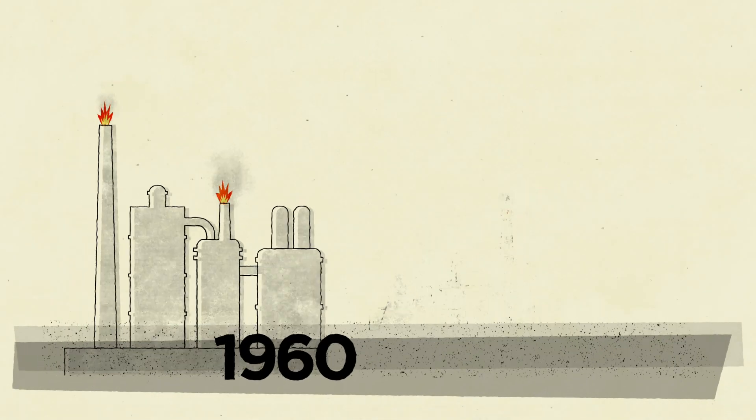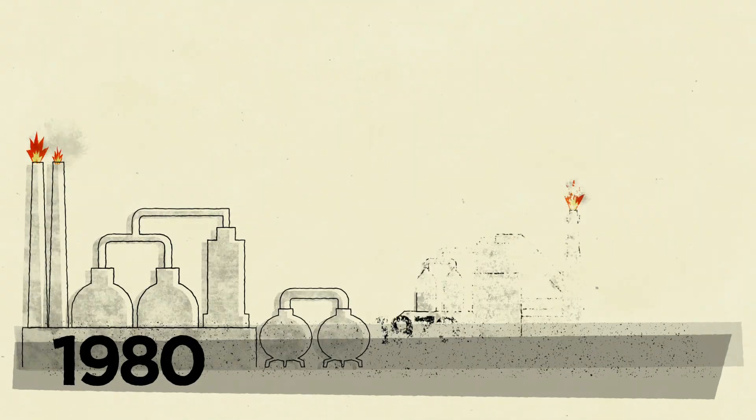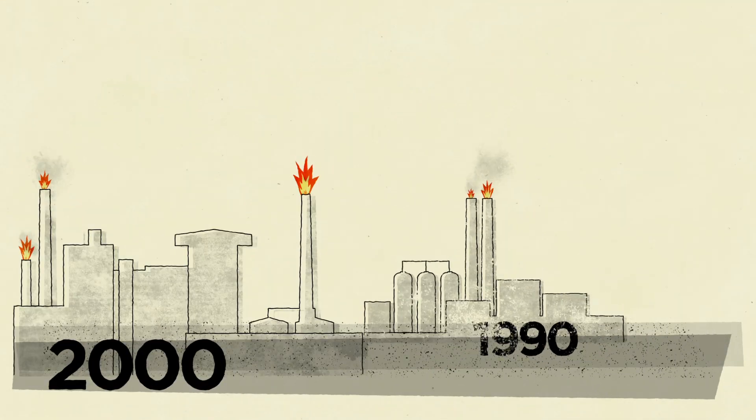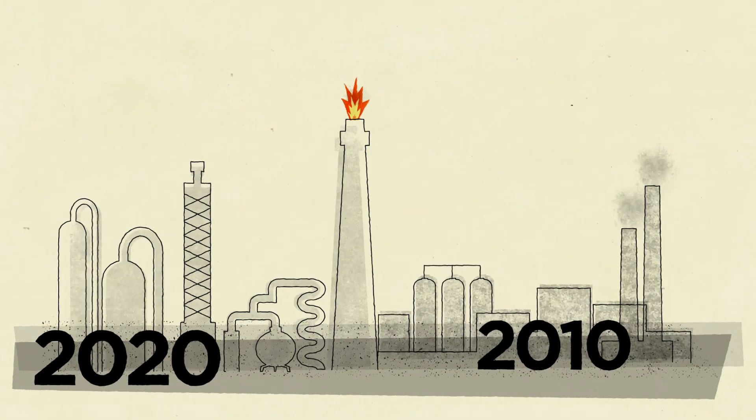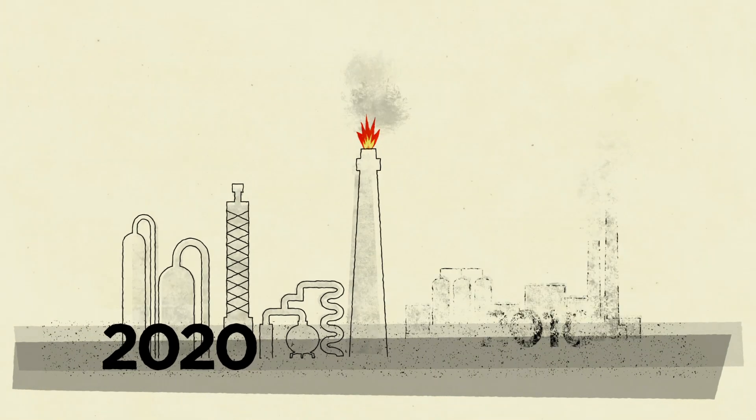1. Chemical recycling is the latest in a long series of failed technologies to address the plastic waste crisis. Despite decades of promises and development, commercial or large-scale operations are rare.